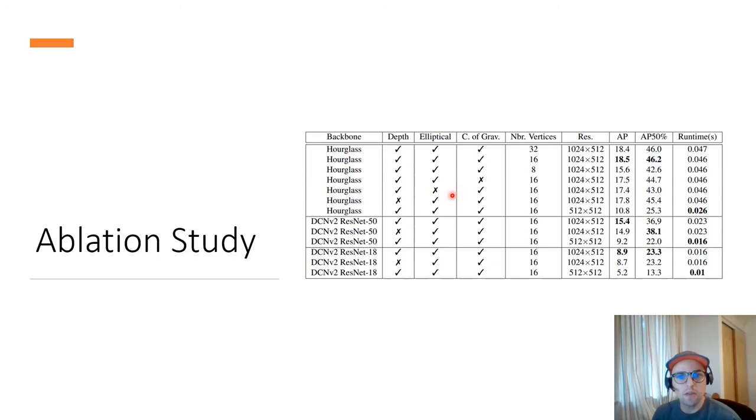We also tested the contribution of the depth branch, and as well we tested some faster backbones. We can see that using ResNet-50, we can double the speed and only reduce like three points in AP. This is a pretty good compromise. But if we use a ResNet-18, the AP drops almost half and the speed is faster, but it's not really worth it in my opinion.